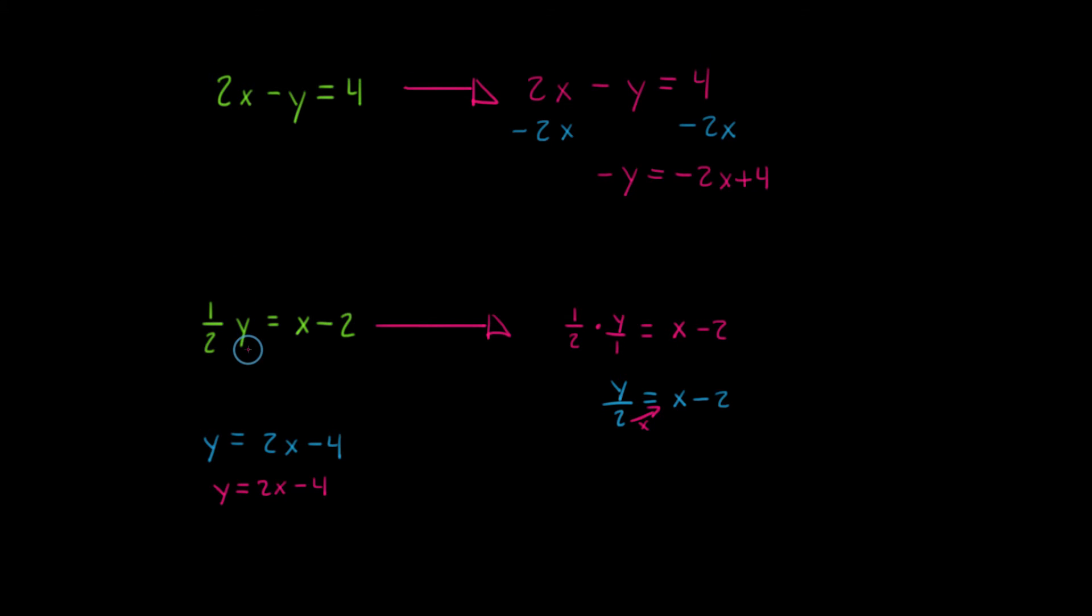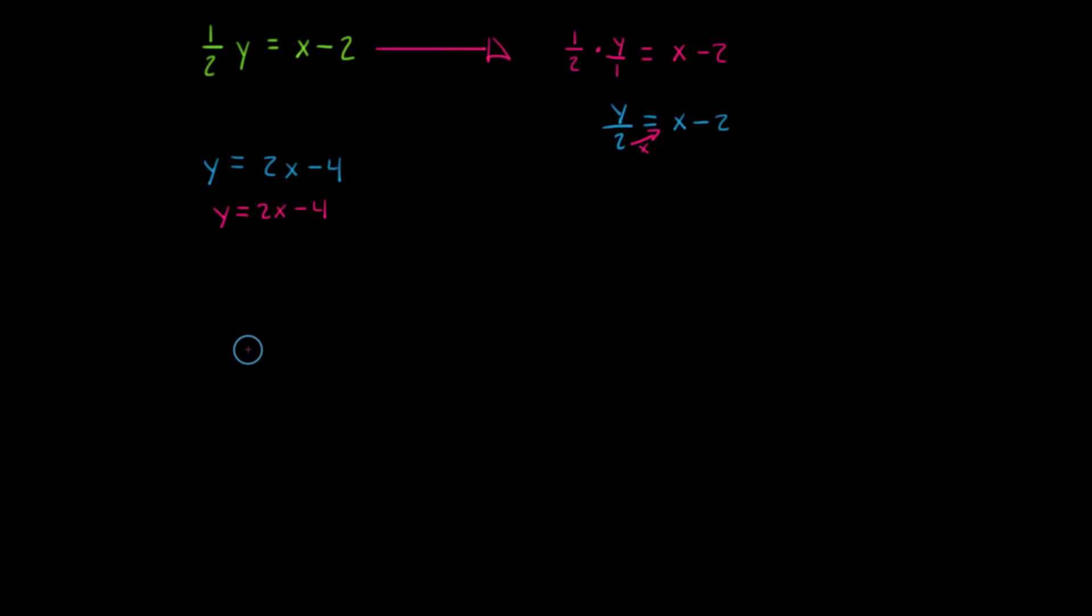And I actually want to get a little bit more room on screen. So I'm going to substitute this in for y, but notice that this is equivalent to this. But let's look at it another way. We have 2x minus 4, 2x minus 4.